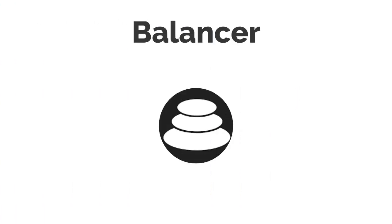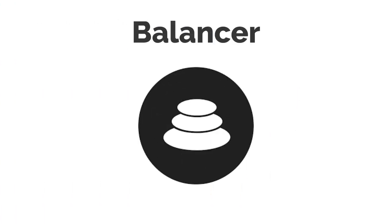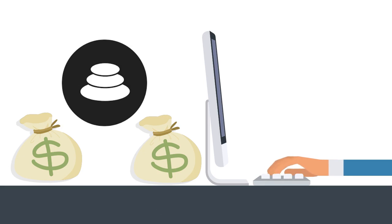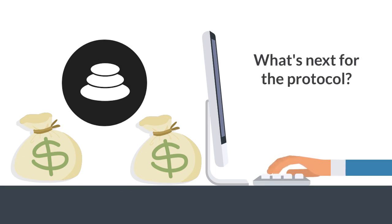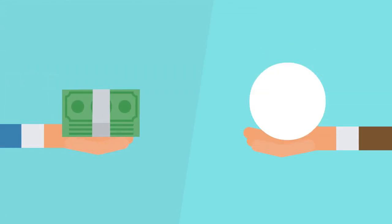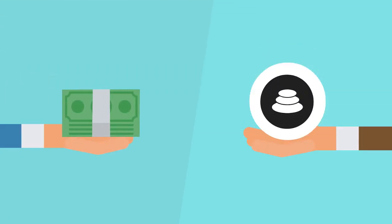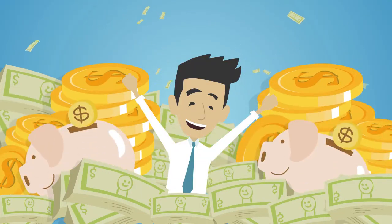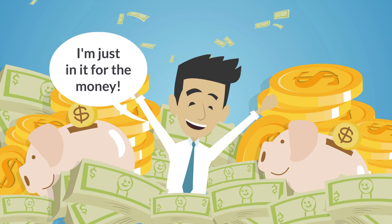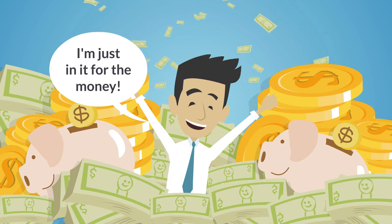Balancer uses the BAL token so as to encourage liquidity providers to be involved in the decision-making process that determines what actually happens to the protocol. In other words, why not give liquidity providers BAL and thereby essentially provide a hassle-free path to voting? Otherwise, liquidity providers might not be incentivized enough to care about anything other than their earnings.